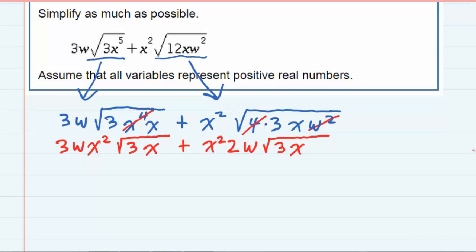And then I can rewrite this one on the left, 3w x squared times square root of 3x. I can't really simplify that any further. But if I rewrite this one on the right, just putting the number in front and rearranging things, that's 2w x squared square root of 3x. And you notice now that both of these terms have the same w x squared square root of 3x.